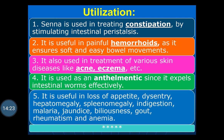The worms present in the intestine can be expelled by the sennosides. Senna is also used for loss of appetite, treatment of dysentery, hepatomegaly (increase in size of the liver), splenomegaly (increase in size of the spleen), indigestion, malaria, jaundice, biliousness (increase in amount of bile), and for the treatment of gout, rheumatism and anemia.